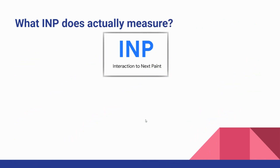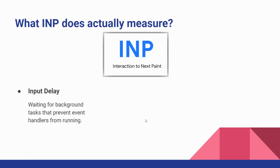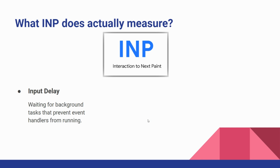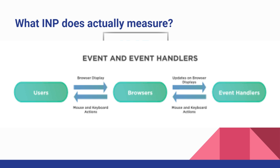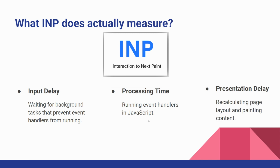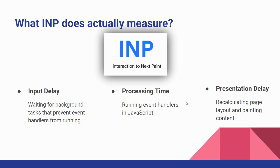So how does INP work? It measures the time between a user interaction and the next visual update on the page. This delay involves three main components: input delay, meaning waiting for background tasks that prevent event handlers from running; processing, meaning running event handlers in JavaScript; and presentation delay, meaning recalculating page layout and painting content. Each of these plays a crucial role in determining website responsiveness.